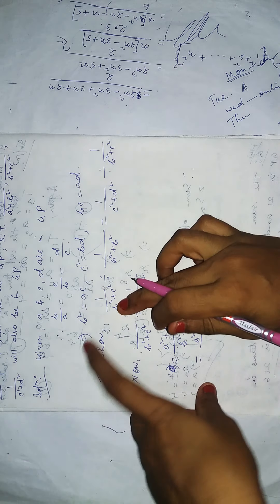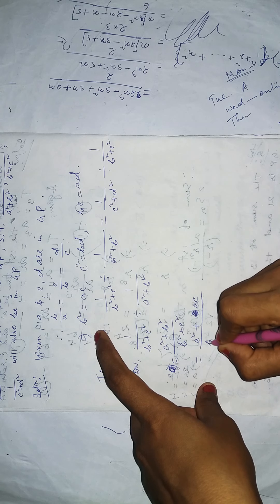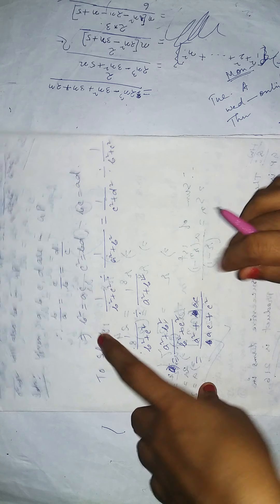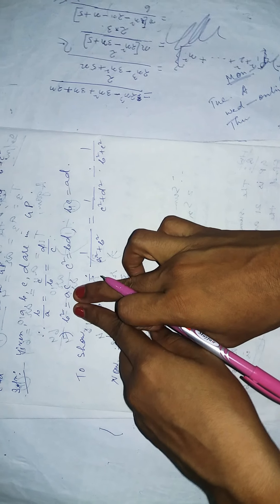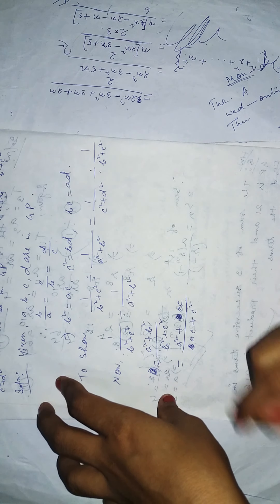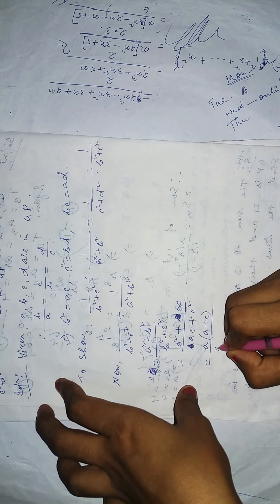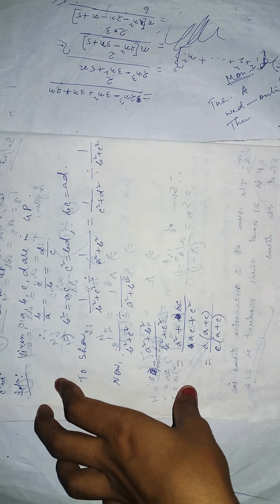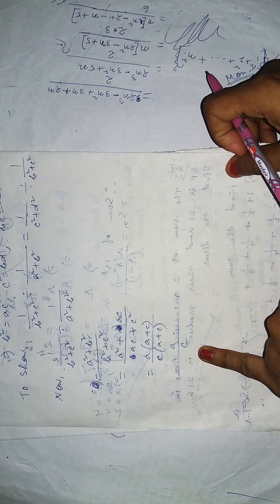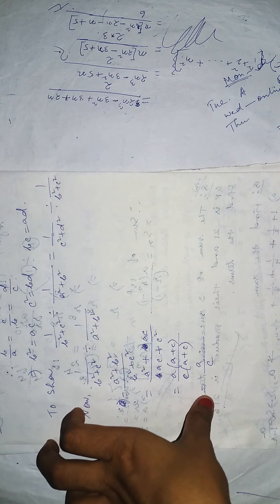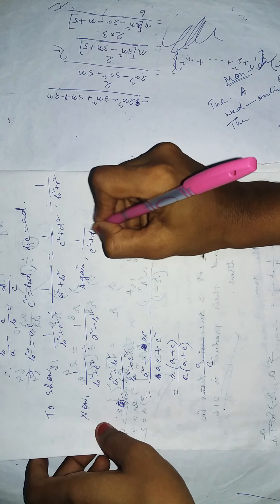After simplification, in place of b² you write ac — substitute into the numerator and denominator. Since b² = ac, replace b² with ac. Then take common factor (a+c) — after (a+c) gets cancelled, the result is a/c.